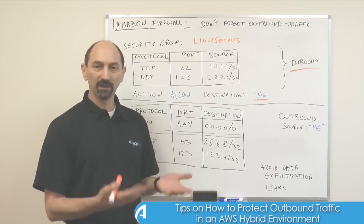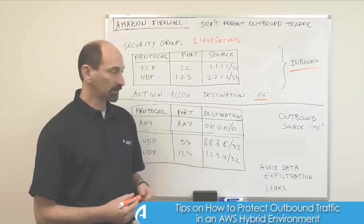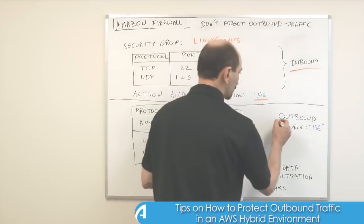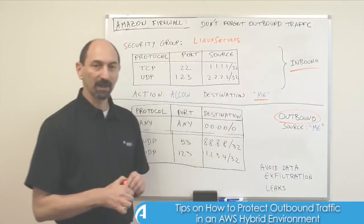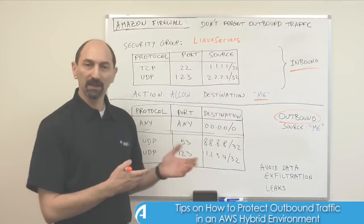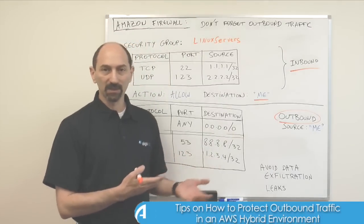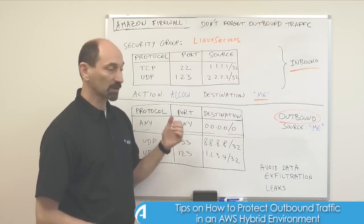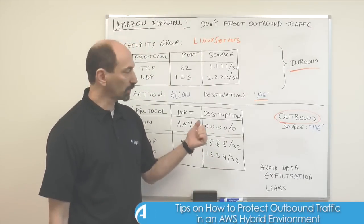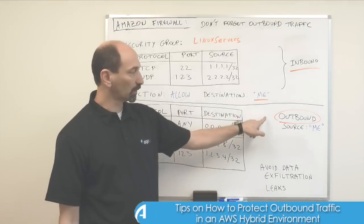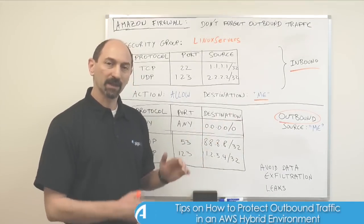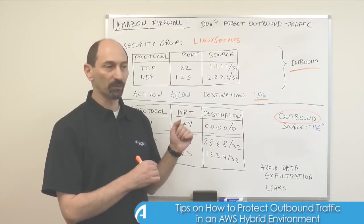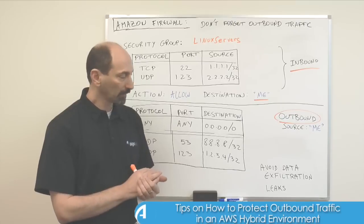What about traffic in the other direction? Traffic that's outbound. You need to protect that as well, and we didn't see that that was even possible. So it is possible. Amazon does provide you with a way to control outbound traffic, except that it's not very visible or prominent.